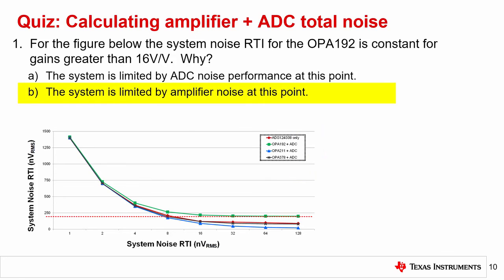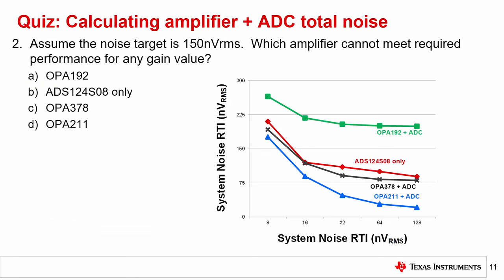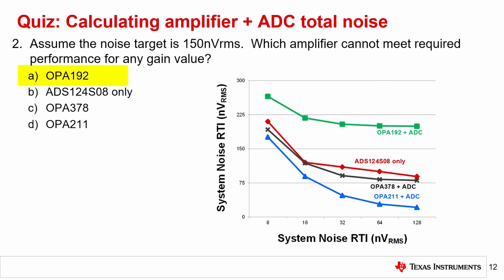The answer is B. The system noise is limited by amplifier noise at this point. Question 2. Assume the noise target is 150 nanovolts RMS. Which amplifier cannot meet the required performance for any gain value? The answer is A, the OPA192.